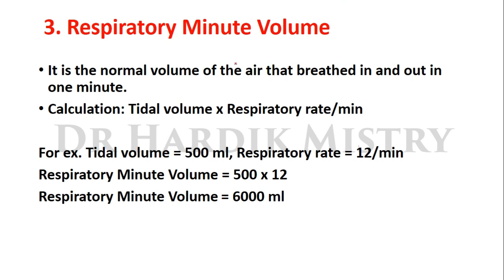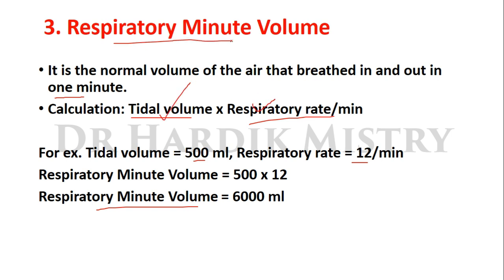Now the respiratory minute volume. It is the normal volume of air breathed in and out in one minute. The formula is: respiratory minute volume equals tidal volume multiplied by respiratory rate per minute. For example, with a tidal volume of 500 ml and respiratory rate of 12 per minute, respiratory minute volume equals 500 multiplied by 12, which equals 6000 ml.